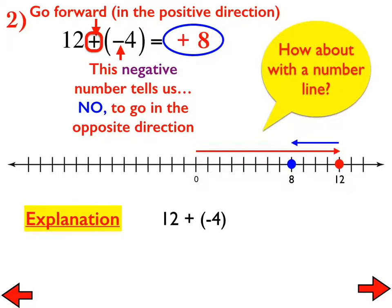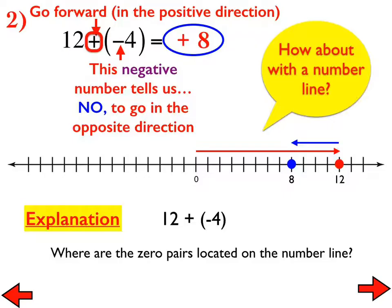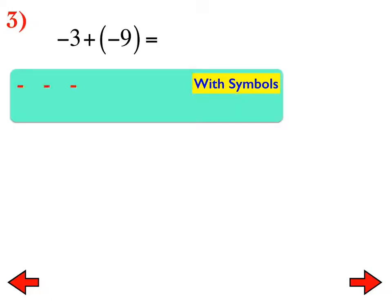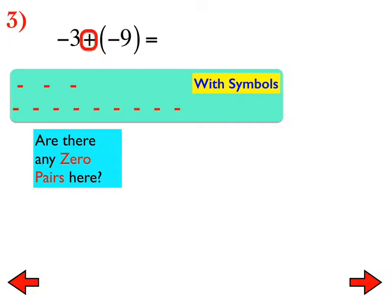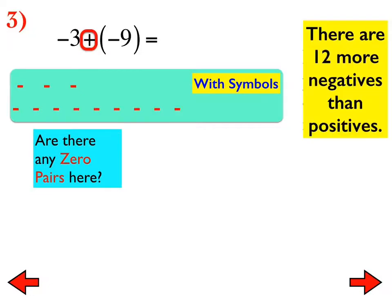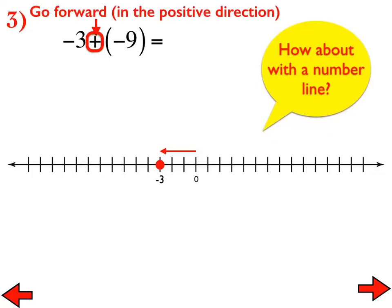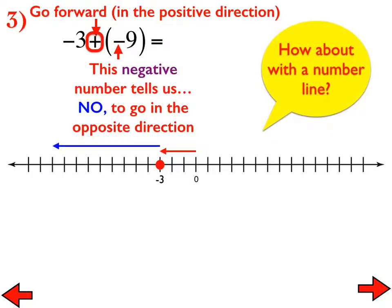Number three is negative 3 + (-9). With symbols, we have three negatives and we're adding nine more negatives — no zero pairs in this picture. We have 12 more negatives than positives because we don't have any positives. That's one reason the sum is negative 12. With the number line, we start at zero, go out to negative three, and keep going in the negative direction nine more units. Why isn't there an overlap in this graph like in numbers one and two? Because they're all negatives — there aren't any zero pairs.